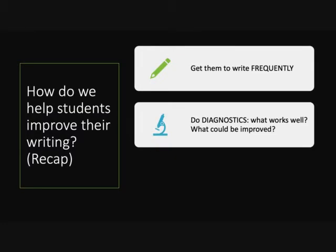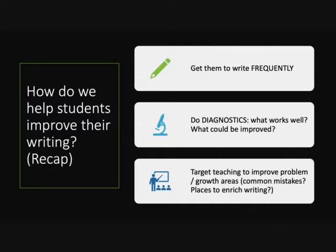We're also going to take those short texts and look at them as teachers and say what's working well, what could be improved, what are some of the general patterns in class that the students are doing, and then we're going to target our teaching to improve problem areas or even growth areas. What are some of the places where a lot of students are making mistakes, and what are some places where we could help students enrich their writing and make it even better. If you focus your teaching on exactly where they're at by using diagnostics, you're going to find that they improve a lot faster.